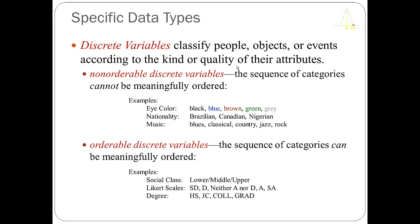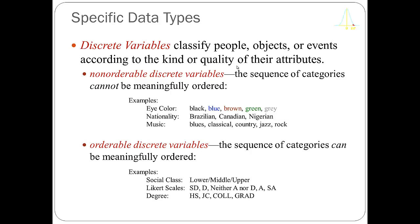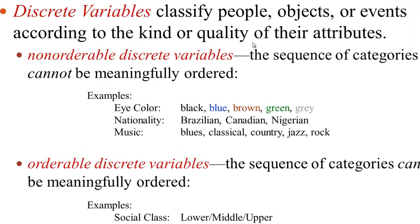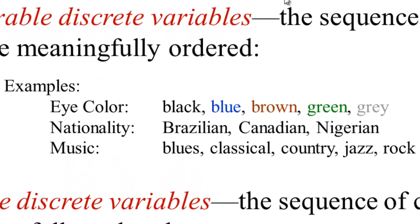Within qualitative data, we have what are called discrete variables — really two kinds: non-orderable and orderable. When we talk about discrete, we mean putting things into categories, classifying people or objects by the kind or quality of their attributes. With a non-orderable discrete variable, the order is irrelevant. So if we ask people their musical preference and they can respond blues, classical, rap, jazz, or rock, we can say two people are similar or dissimilar in musical interest, but we can't say one is greater than or less than the other.